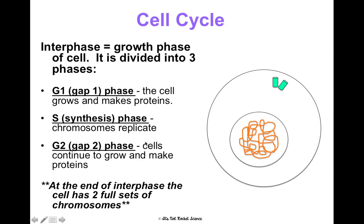At the end of all of this, there should be two full sets of chromosomes so that when the cell divides, we get one set in each.